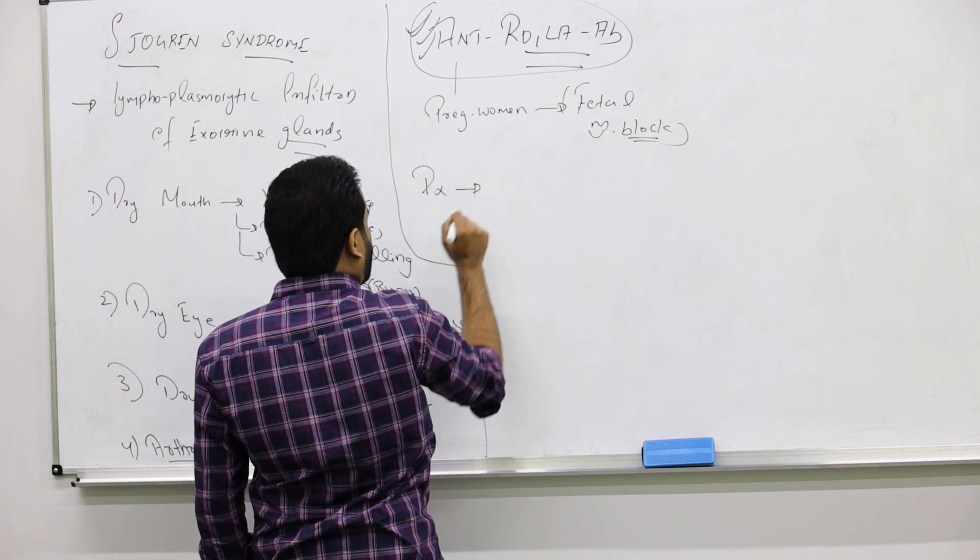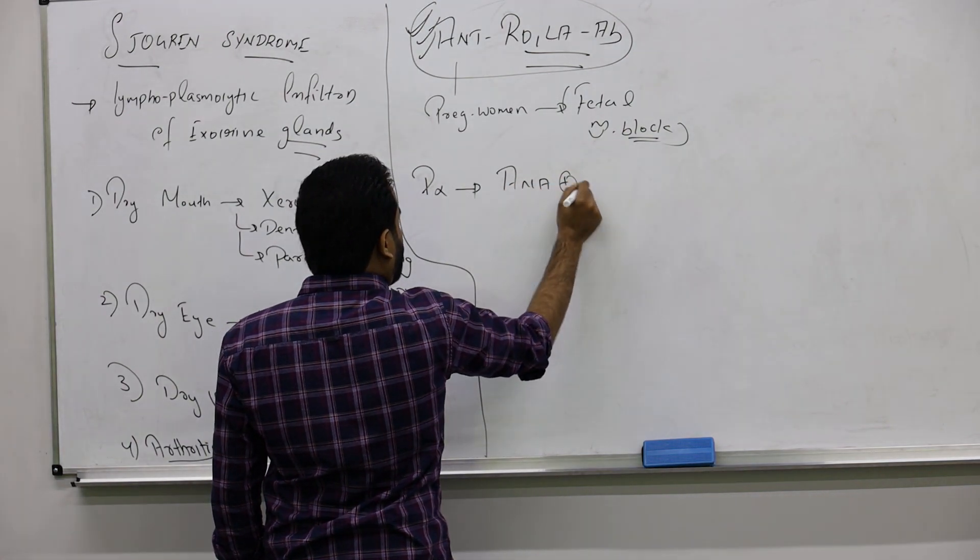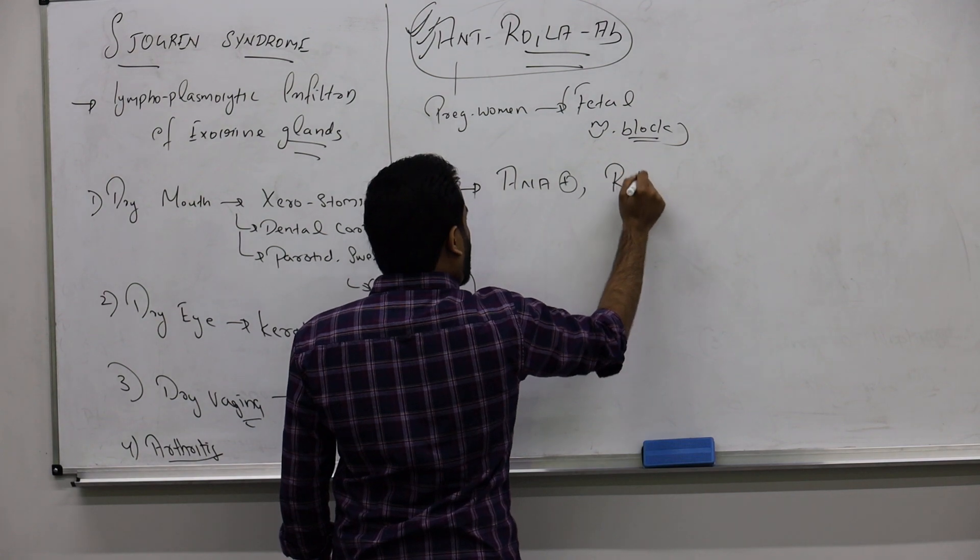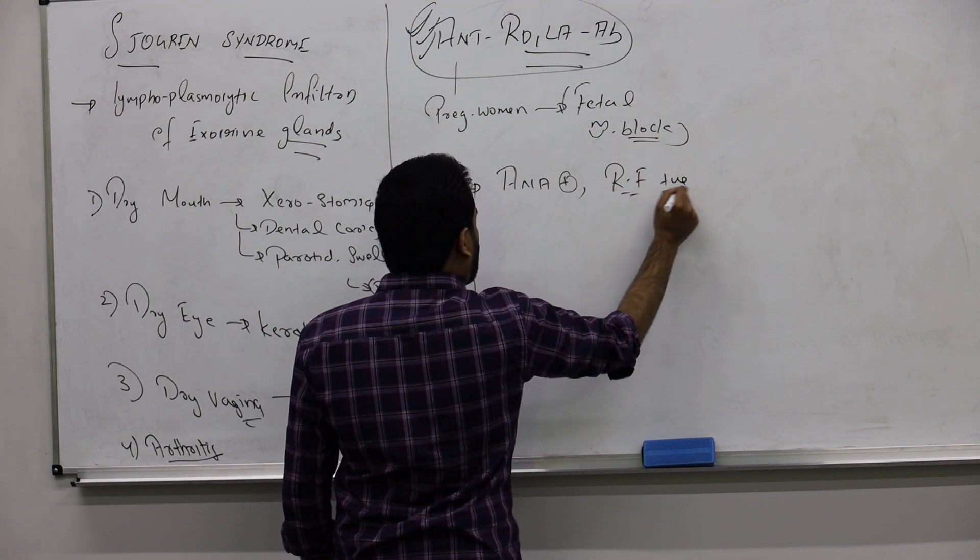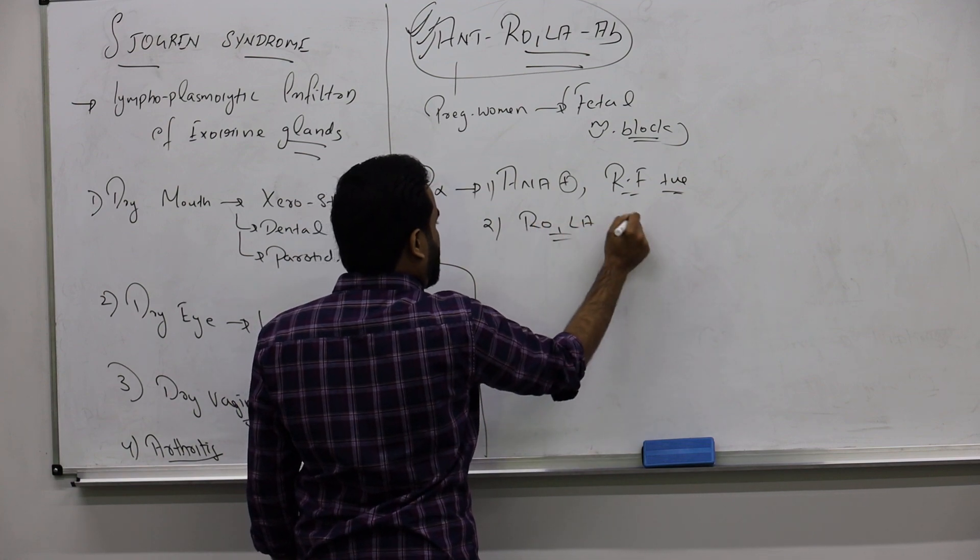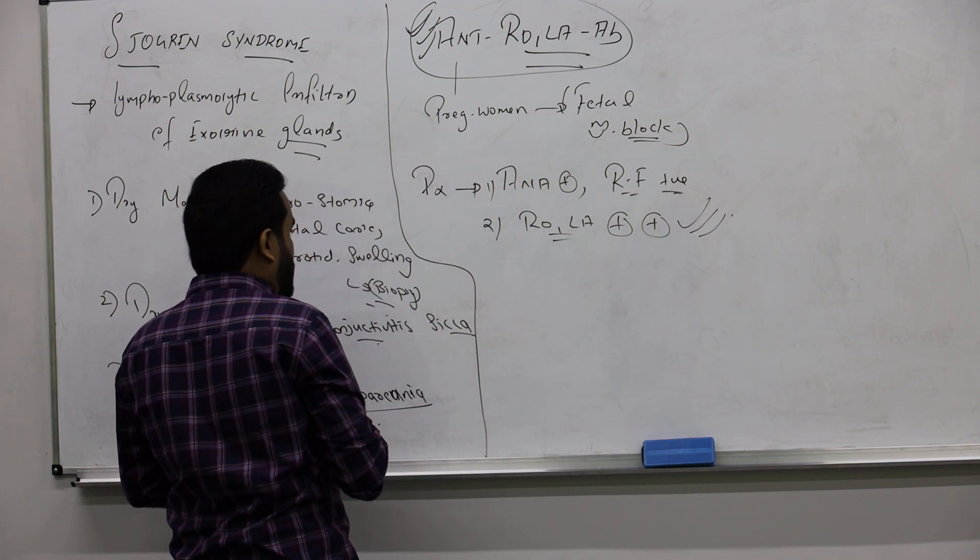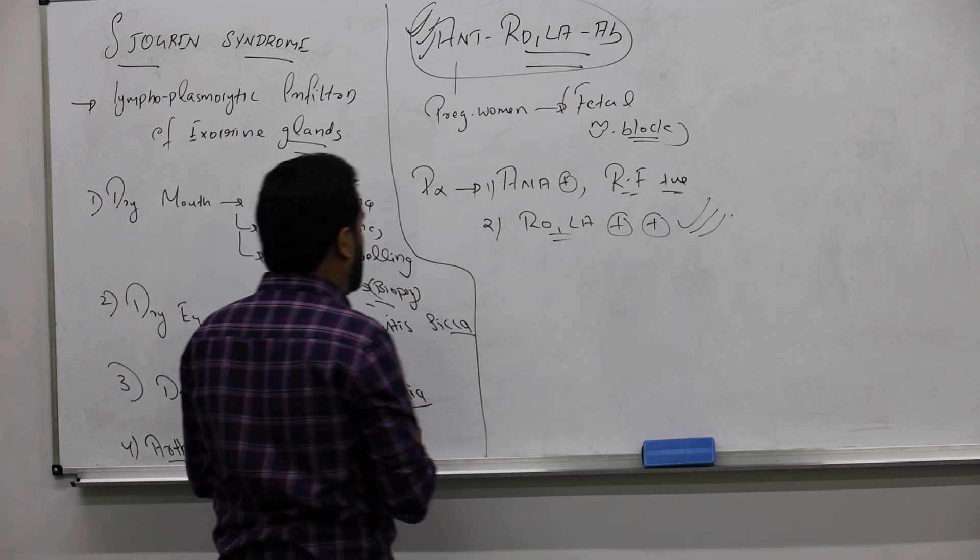Actually for diagnosing, they are ANA positive, anti-nuclear antibody positive and rheumatoid factor will be also positive. But they are not specific. As I told you, you check for Ro, La, that is the main thing, the best diagnostic one. This will be the correct answer. They ask you and you can do even biopsy of parotid to check it.